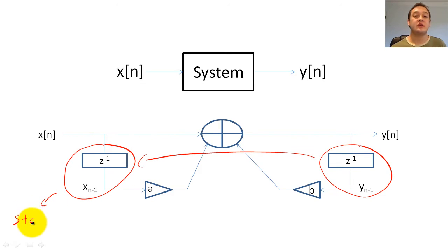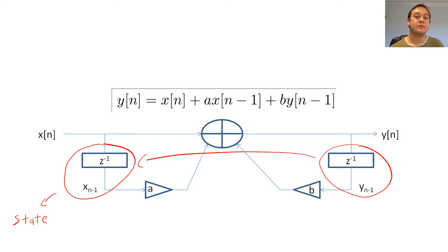More formally, the state of a system at a given time is a minimal set of variables which together with the current input, x of n, uniquely define y of n. Since this filter is defined by the following difference equation, the state of the system would be the set x of n minus 1 and y of n minus 1.